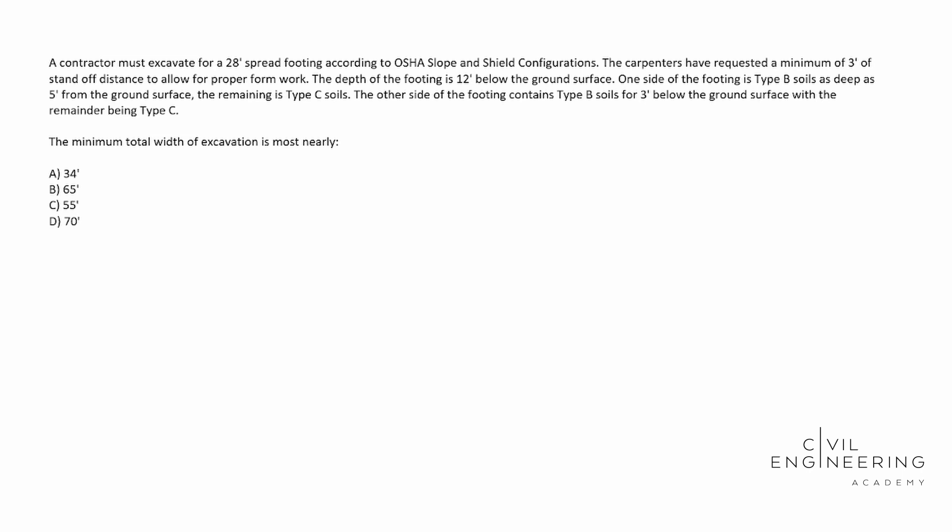The depth of the footing is 12 foot below the ground surface. One side of the footing is type B soils as deep as five feet from the ground surface. The remaining is type C soils. The other side of the footing contains type B soils for three feet below the ground surface with the remainder being type C. The minimum total width of the excavation is most nearly what?